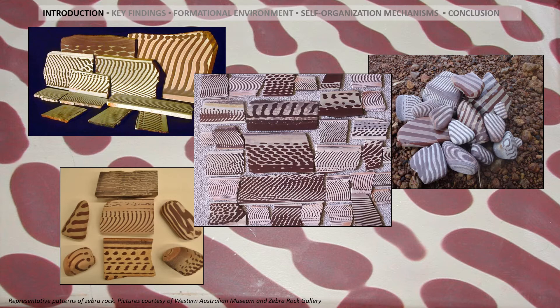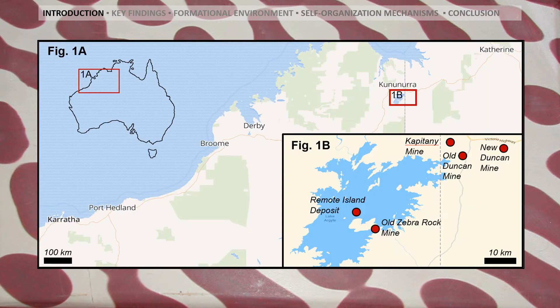Examples range from horizontal banding to curved vertical banding, to ordered lattices of dots or rod structures, to other more complex pattern shapes and morphologies. Worldwide, zebra rock can only be found in outcrops of the Ranford Formation around Lake Argyle in the East Kimberley. This study examined samples from five such outcrops, which are shown in figure 1p.